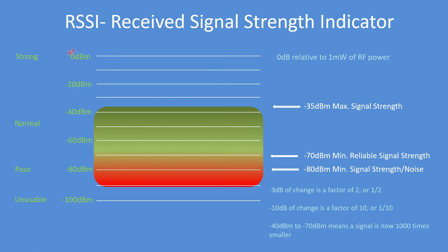Here's an illustration of receive signal strength indication. 0 dBm is a strong signal. A normal signal ranges from about minus 40 to minus 70 dBm - that's a good range and represents a factor of a thousand in signal strength. A poor signal is anything less than minus 80, and an unusable signal is when it starts to approach minus 100.